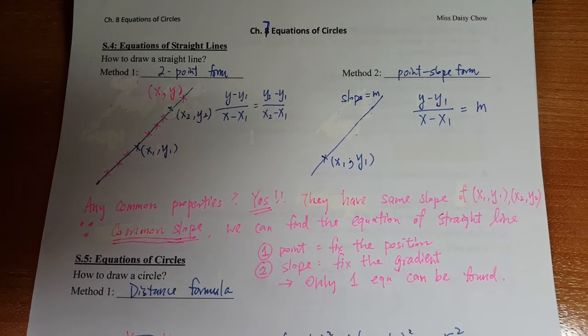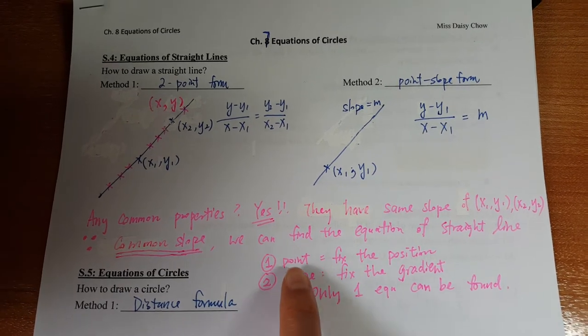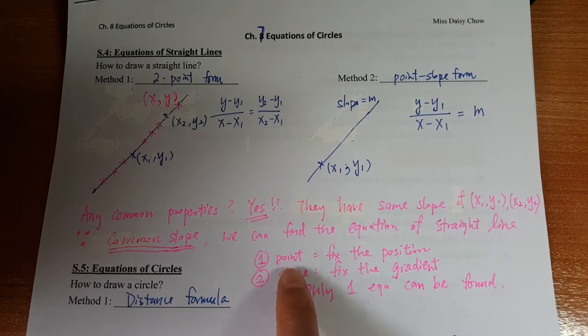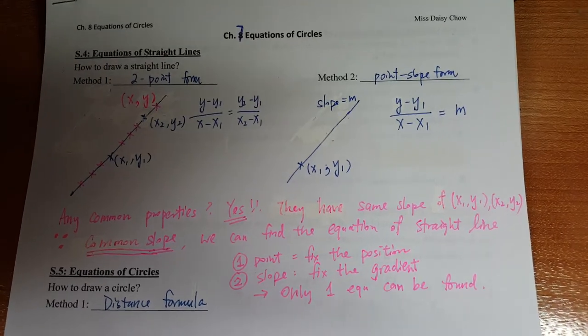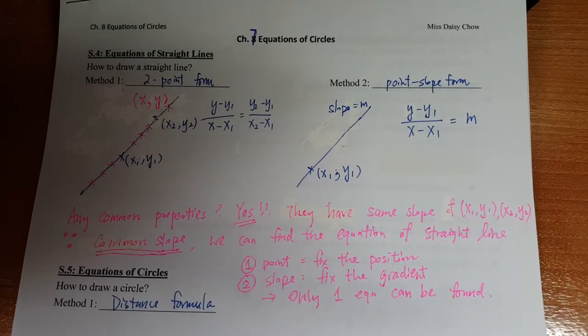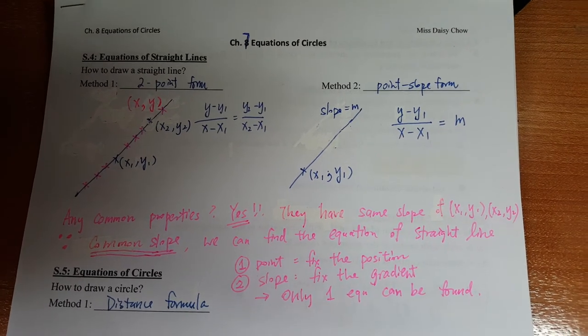Also, if the questions provide you a point and the slope, it means that it fixes the position and also fixes the gradient. That means you can only find one and only one equation.